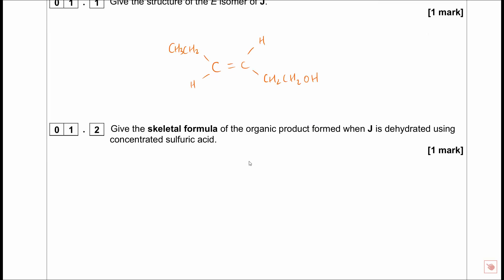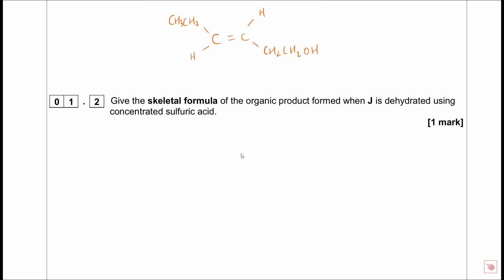Give the skeletal formula of the organic product formed when J is dehydrated using concentrated sulfuric acid. The key thing is to look at the alcohol portion of our molecule with this double bond. The dehydration is going to occur at this portion - we're taking away the OH and losing the adjacent hydrogen as well, giving us a double bond there. Our final product, drawing just the carbons, gives us that structure.